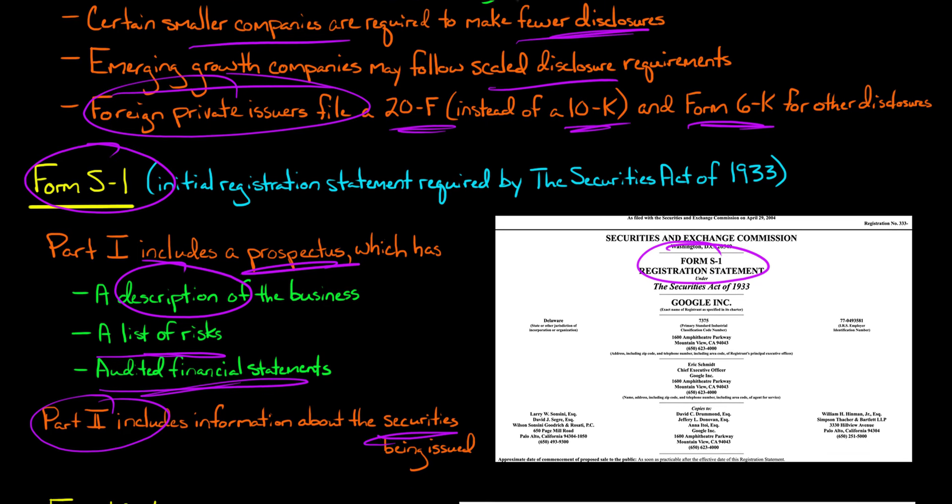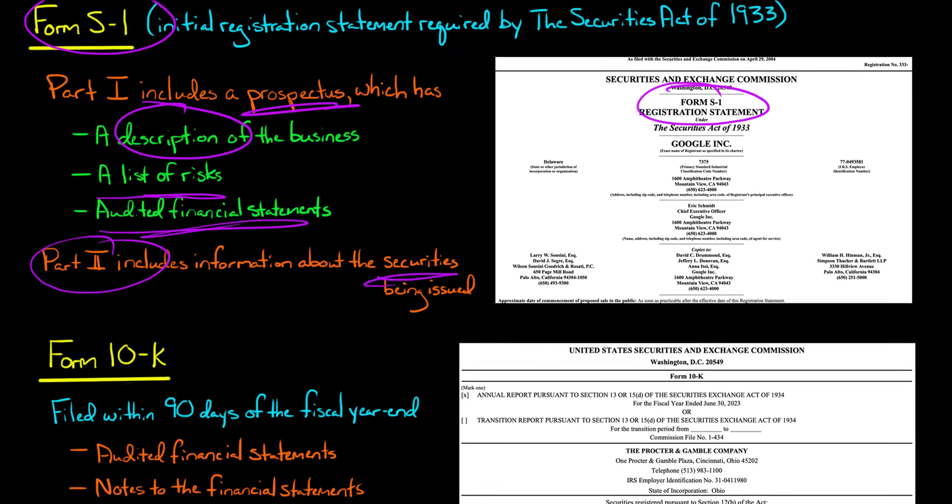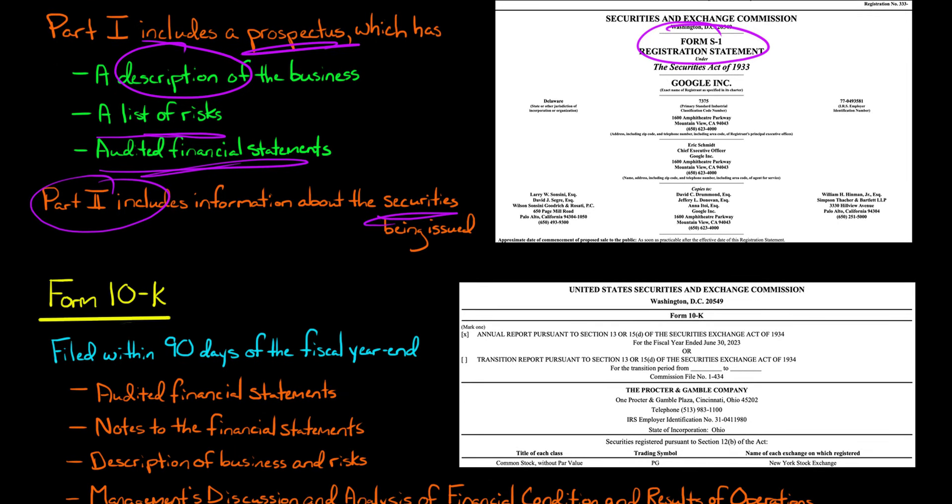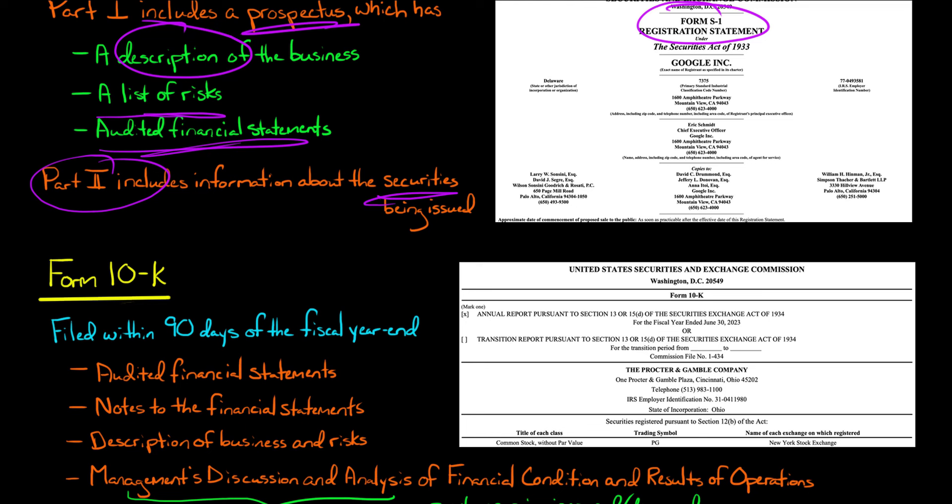Now the Form 10-K. The S-1 is when the company is initially going public, but it's not something that's recurring—you don't file an S-1 every single year. Once you are a public company, then you have the recurring reporting requirements, and one of those is the 10-K. The 10-K is filed every year. It needs to be filed within 90 days of the company's fiscal year end. So if the fiscal year end is December 31st, within 90 days of that the company is going to need to file a 10-K with the Securities and Exchange Commission.